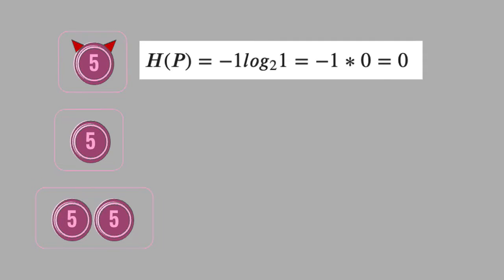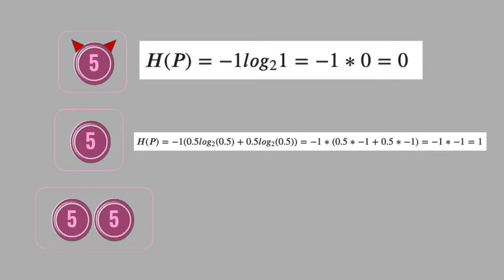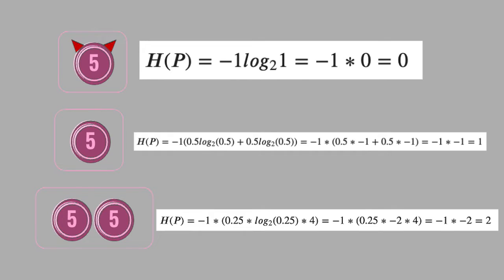Let's calculate the formula for our three test cases: cheater's coin, fair coin and double coin flips. For the cheater's coin, there is only one possible event with probability 1 so the entropy is 0. For the fair coin flip, there are two events with probability of half, the result is 1. And for the double coin flip, we get 2, so it seems like the formula is working as expected.